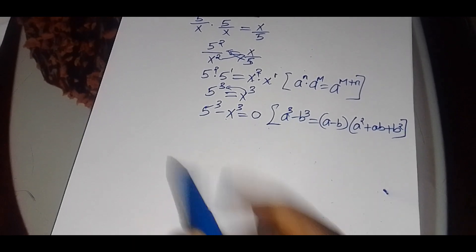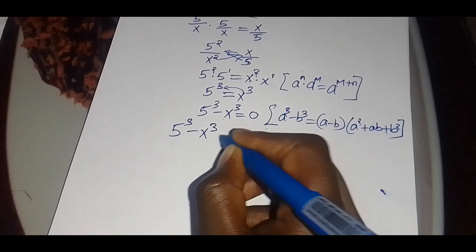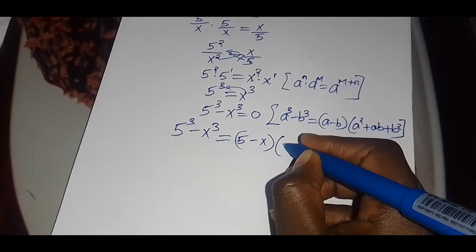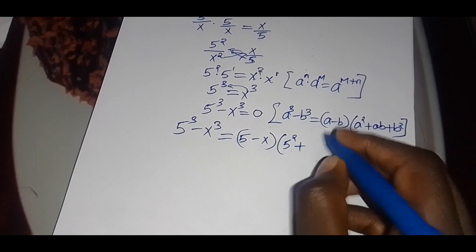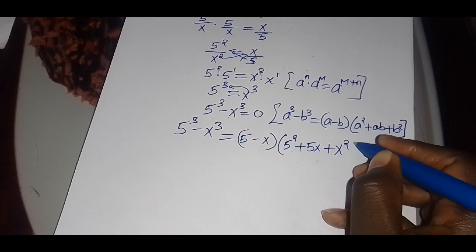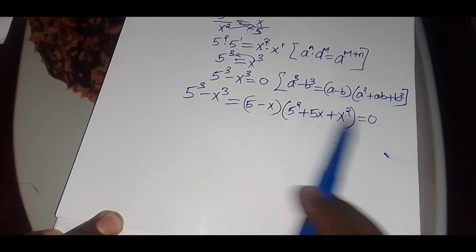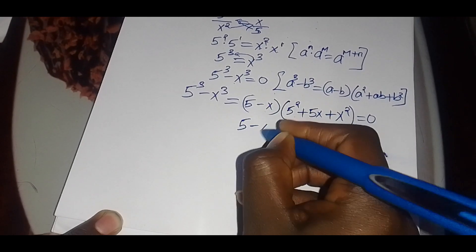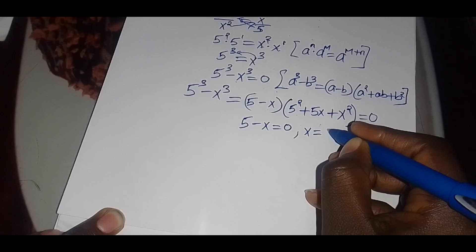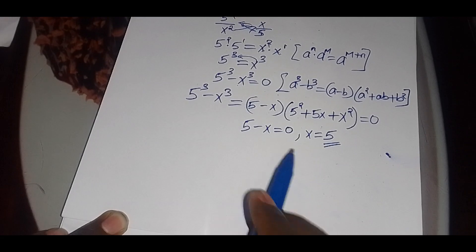We apply this approach: 5 cubed minus x cubed equals 5 minus x, multiplied by 5 squared plus 5x plus x squared, equals 0. We can see clearly the first value of x comes from 5 minus x equals 0, which gives us x₁ equals 5.